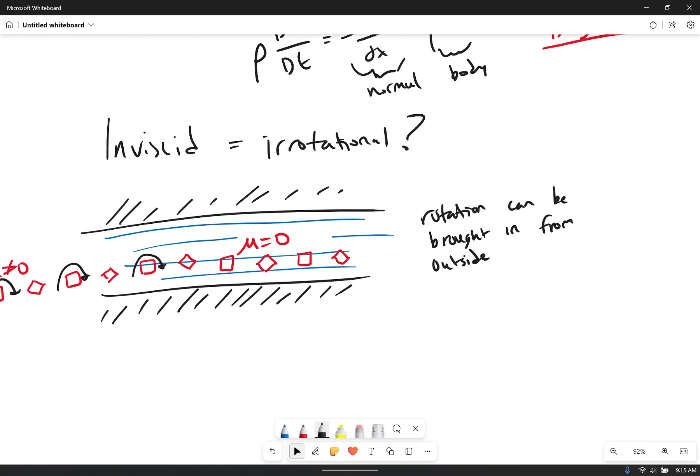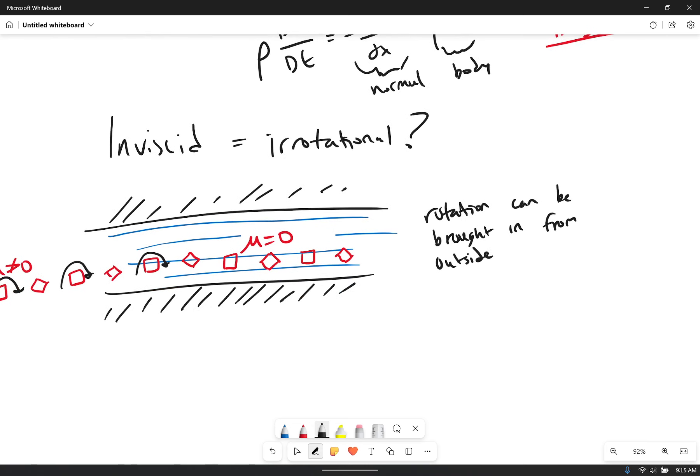Okay, so the answer we get at the end is that inviscid is technically not equal to irrotational. Technically. But as you can see if I am inviscid there's nothing to cause rotation inside of the area that I'm looking, inside of the area that I'm caring about. And so a lot of times you will see the two together. So just because they're not the same, just because they're not actually twins doesn't mean they're not related.